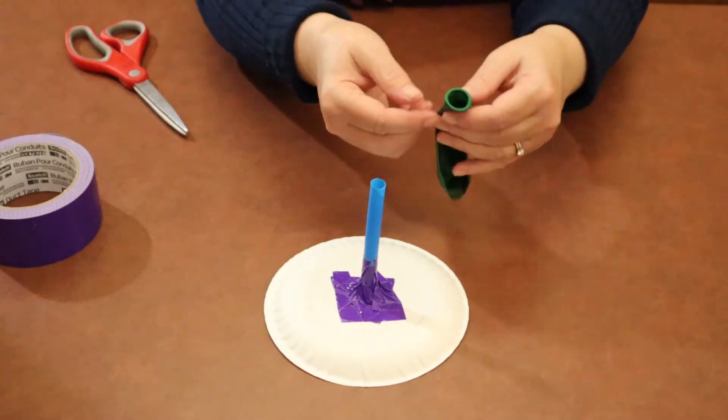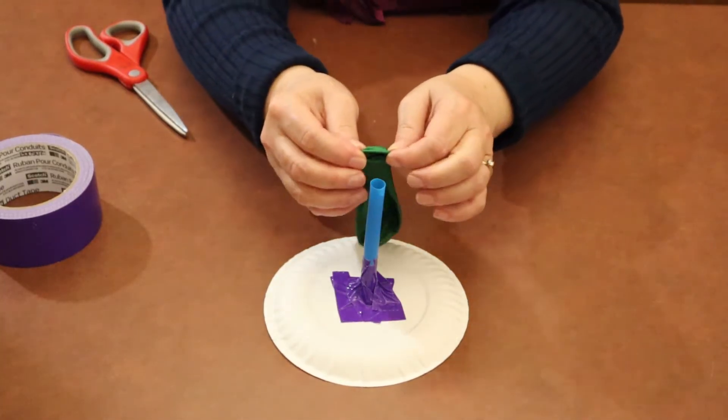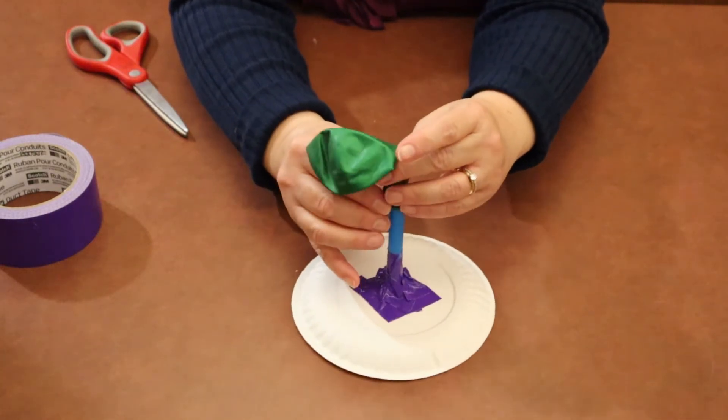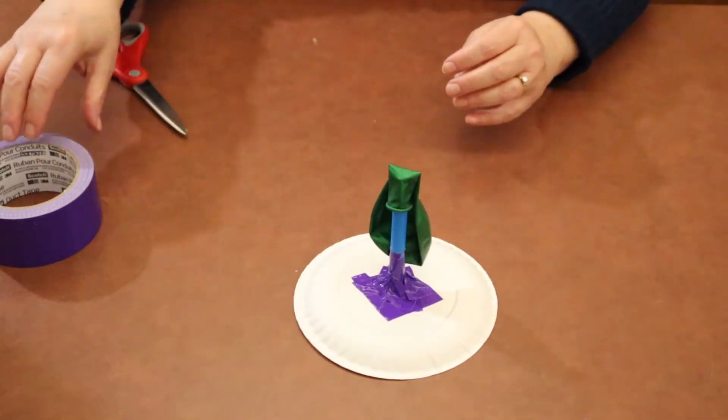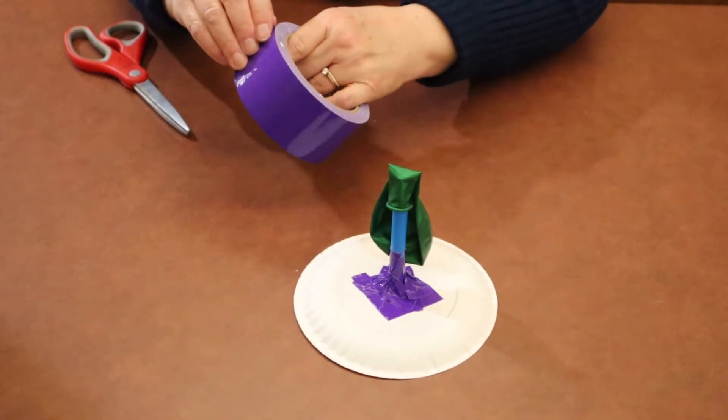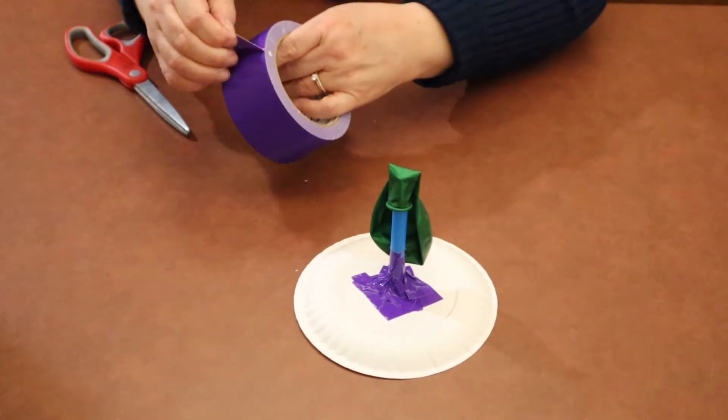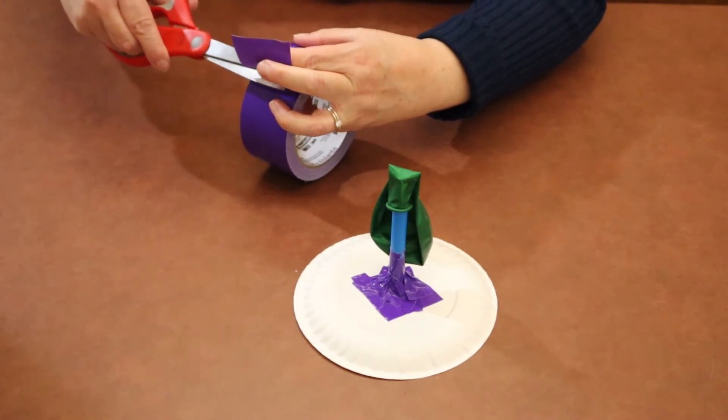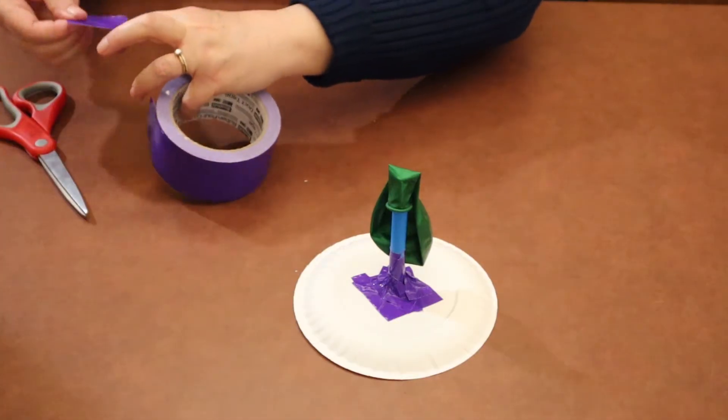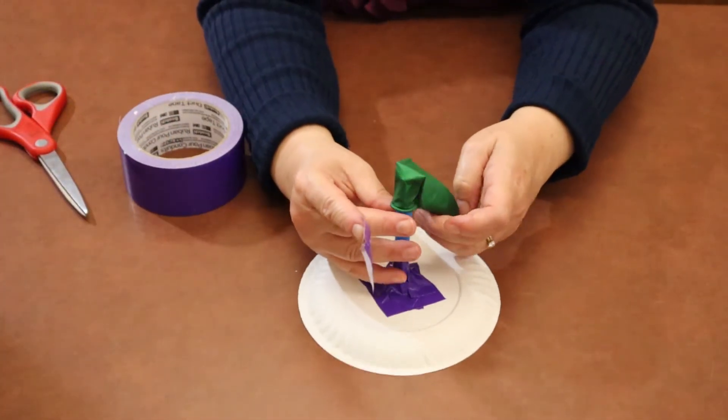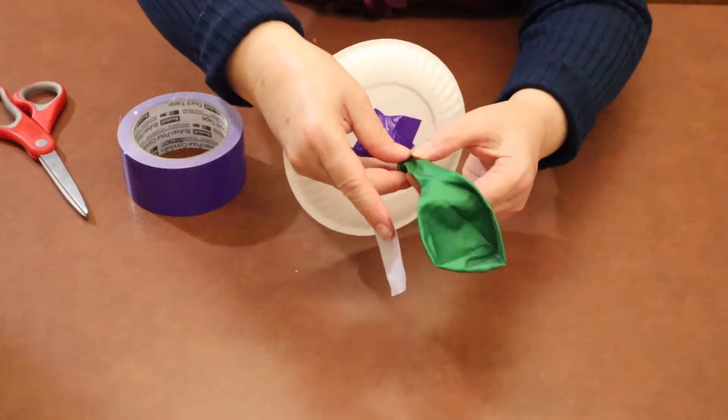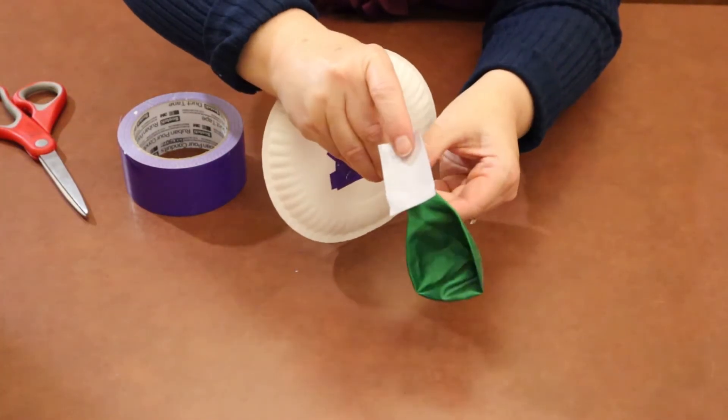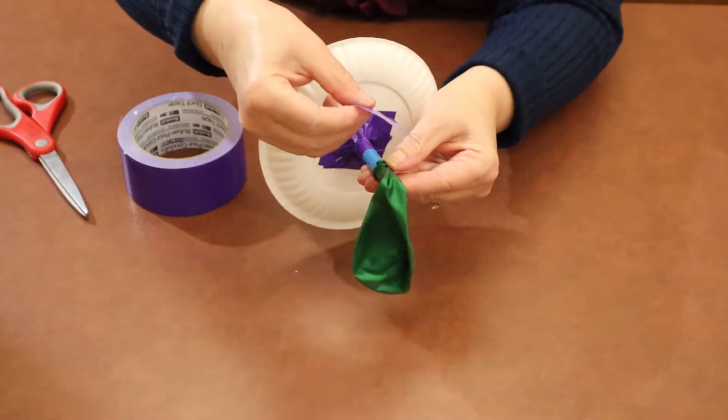Take your balloon and take the open end and stretch it over the straw. Then we're going to take some duct tape and attach the balloon to the straw. The trick that I think is most helpful for this part is to fold it over so that it's tight against the straw.